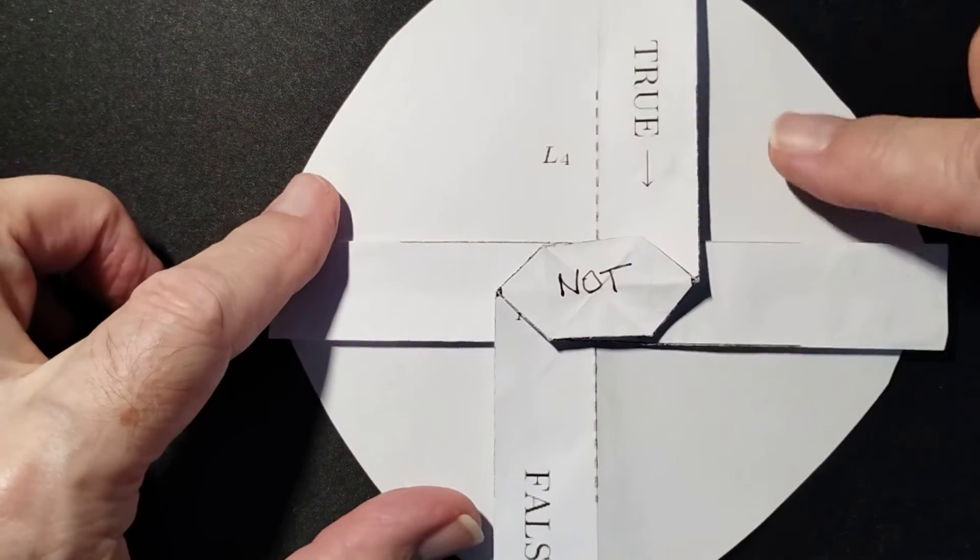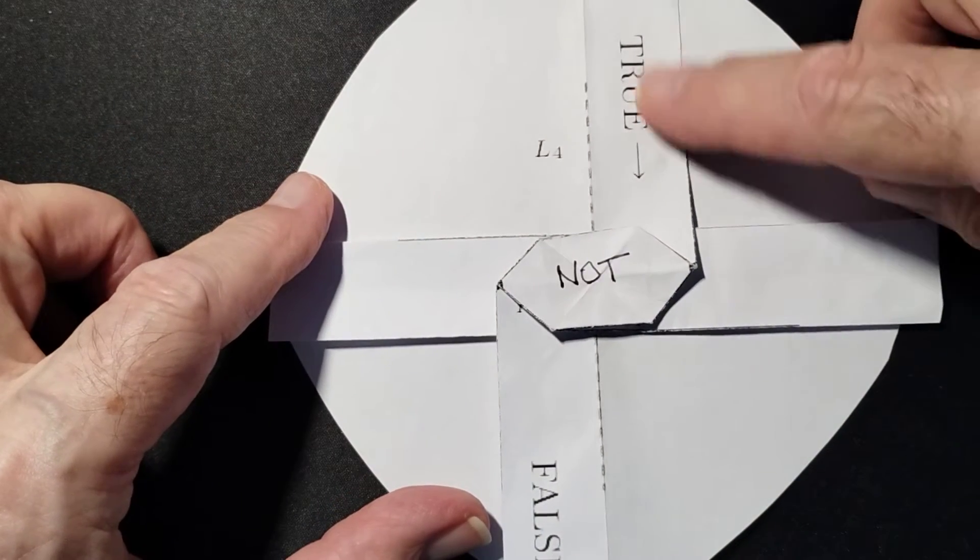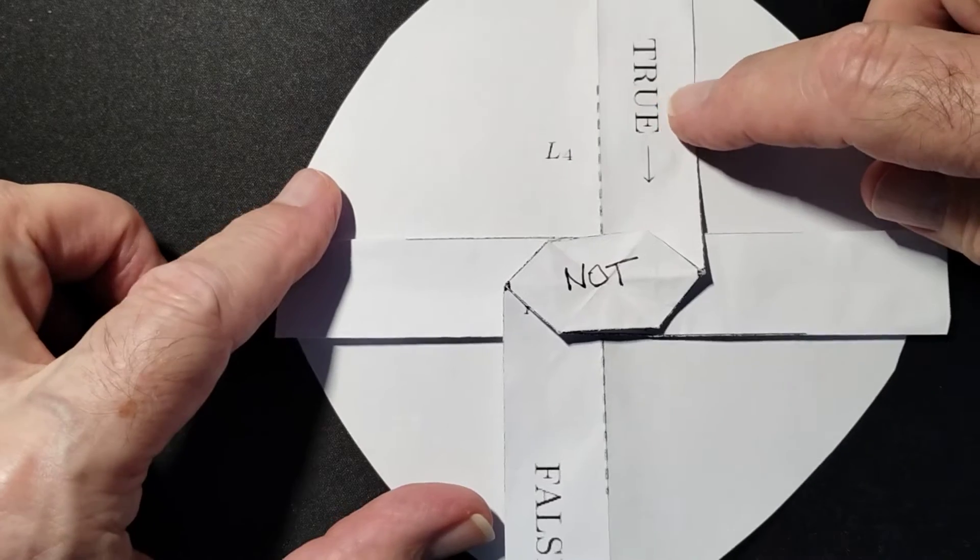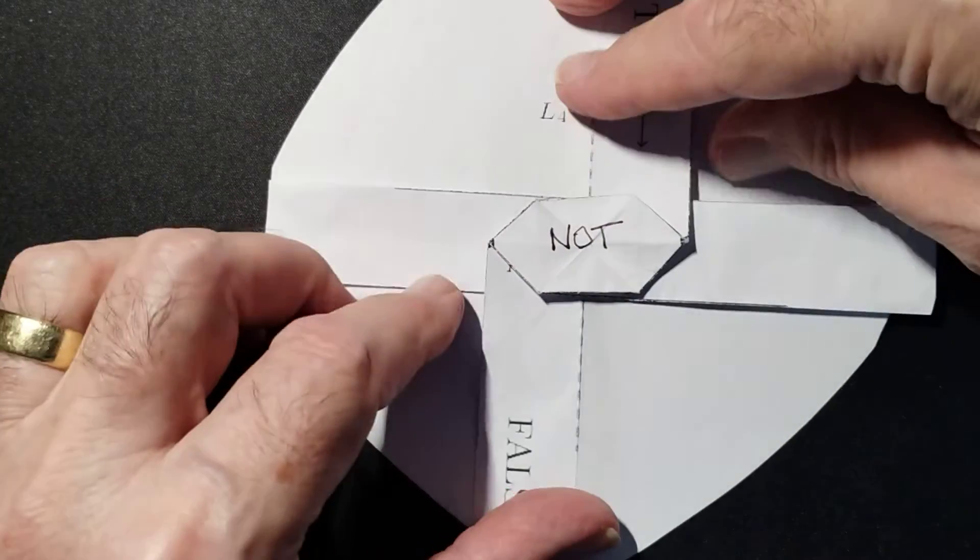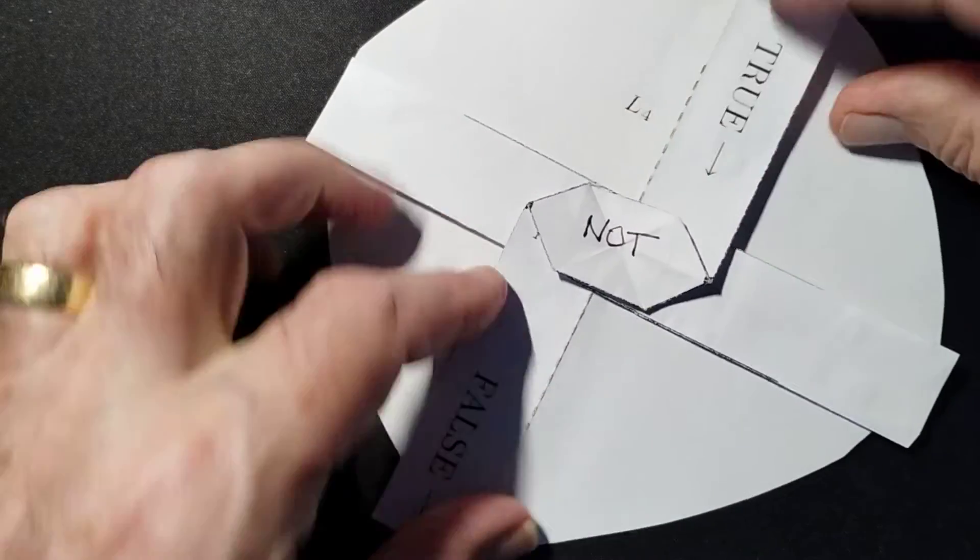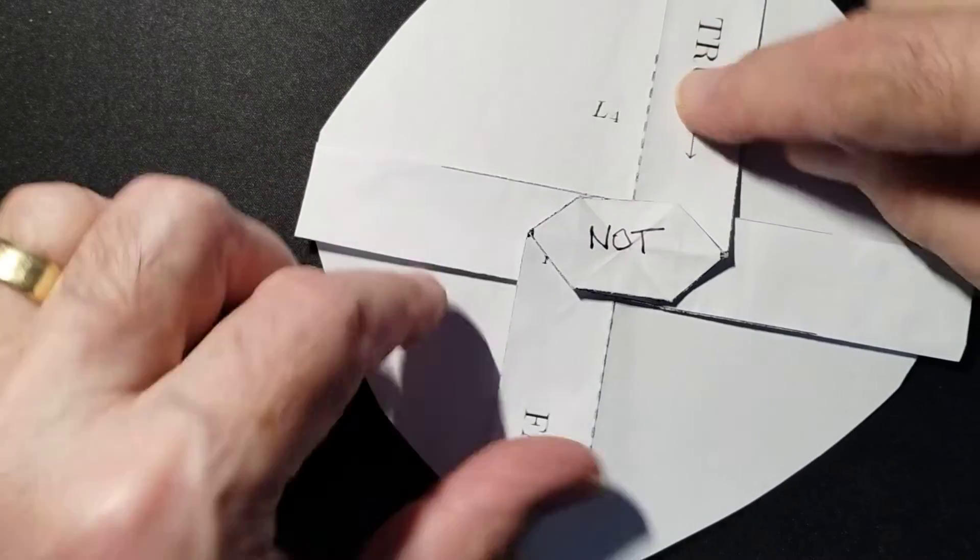The NOT operation merely switches the state of the bit. So if the bit is a true or a 1, then it gets switched to a false. This is a hex twist or something similar to a hex twist. And this is the input, this is the output.